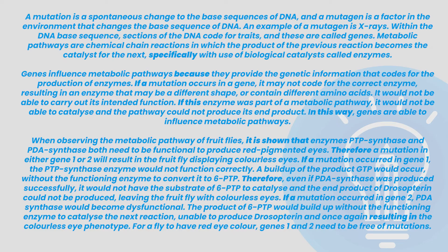When observing the metabolic pathway of fruit flies, it is shown that enzymes PTP synthase and PDA synthase both need to be functional to produce red pigmented eyes. Therefore, a mutation in either gene 1 or gene 2 will result in the fruit fly displaying colourless eyes. If a mutation occurs in gene 1, the PTP synthase enzyme would not function correctly. A buildup of the product GTP would occur without the functioning enzyme to convert it to 6-PTP. Therefore, even if the PDA synthase was produced successfully, it would not have the substrate of 6-PTP to catalyse and the end product of Drosopterin could not be produced, leaving the fruit fly with colourless eyes. If a mutation occurred in gene 2, PDA synthase would become dysfunctional. The product of 6-PTP would build up without the functioning enzyme to catalyse the next reaction, unable to produce Drosopterin, and once again resulting in the colourless eye phenotype. For a fly to have red eye colour, genes 1 and 2 need to be free of mutations.